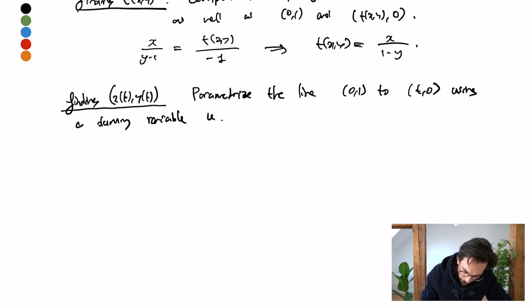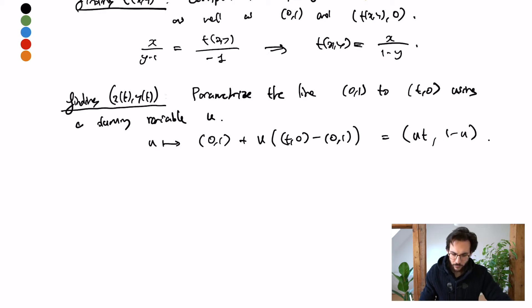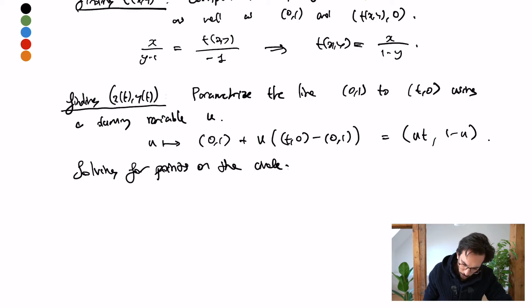So, my parameterization will look like u goes to, let's say we start at (0, 1) and then I add u times the difference of these two points. And so, this is (ut, 1 minus u). I am interested in which of these points on this line lie on my circle. What I can do is to plug in these two coordinates ut, 1 minus u into the equation of my circle and solve. Now, I'm solving for points on the circle.